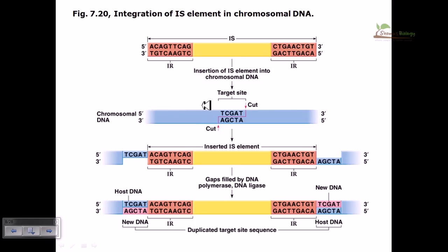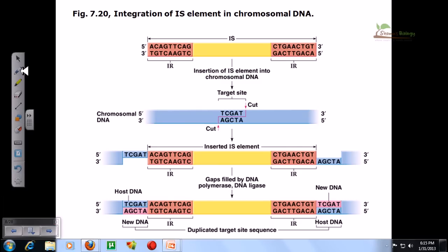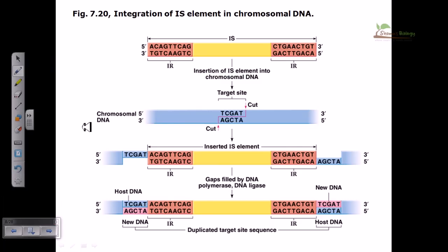Welcome back friends, in this video we are going to see the integration of an IS element into the chromosomal DNA of a bacterial cell. In this picture, we can see the IS element which consists of two different parts.